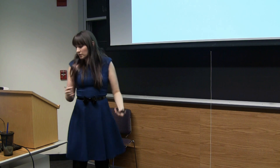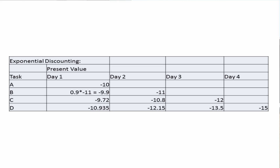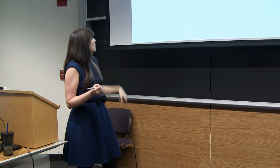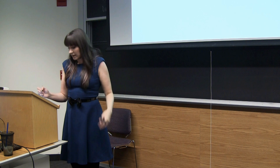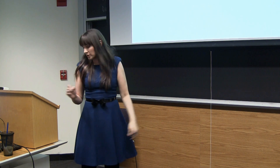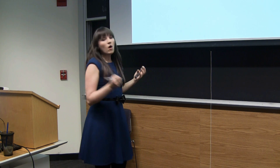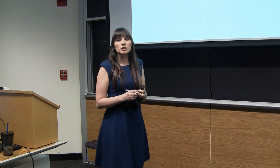Activity B is on day two, so this is just δ times the utility of that task, which is negative 11 — so 0.9 × (−11). Activity C is two days in the future, so this is δ² × (−12). Task D is three days in the future, so δ³ × (−15). We can look at this and ask: what does the rational individual actually do? The rational individual is maximizing the present value of their lifetime utility.